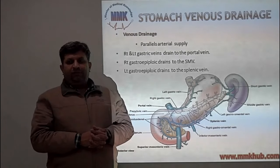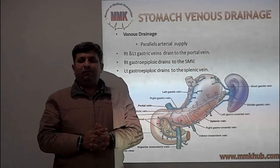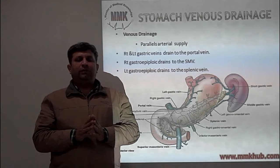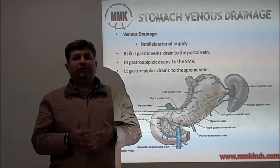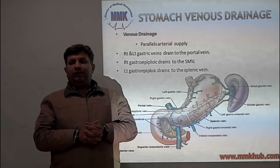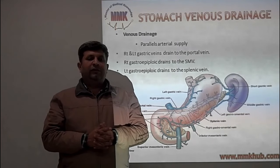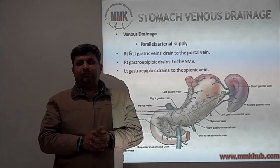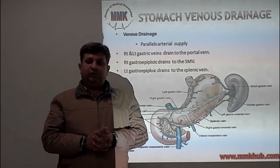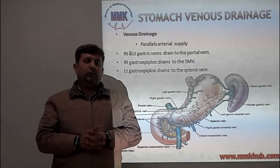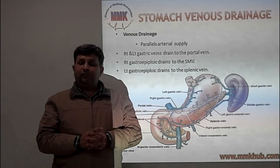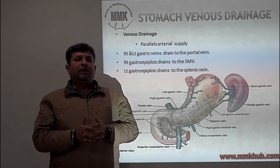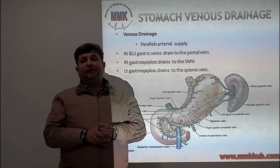Now the venous drainage. Veins are always parallel to the arteries, so if you remember the arterial supply, you can memorize the venous branches easily. Venous drainage is mainly into the right and left gastric veins, which drain into the portal vein. The portal vein is the main venous drainage of the gastrointestinal tract. The short gastric veins and left gastro-omental vein drain into the splenic vein, and these anastomoses are important in cases of gastric varices in portal hypertension.